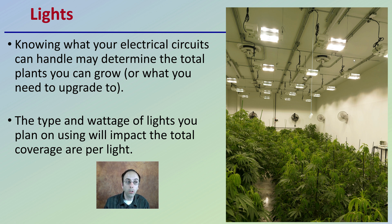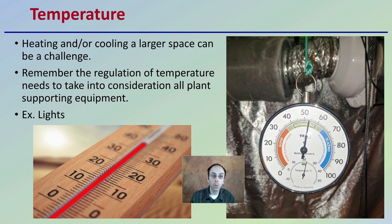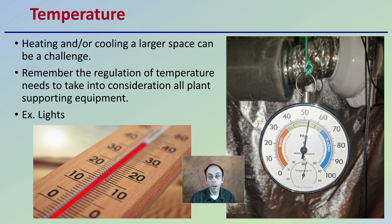In addition to lights, we also have temperature to regulate. Heating and/or cooling a larger space can be a challenge. The regulation of temperature needs to take into consideration all plant-supporting equipment — the lights, fans, and anything else that you might have running in the production area grow space.